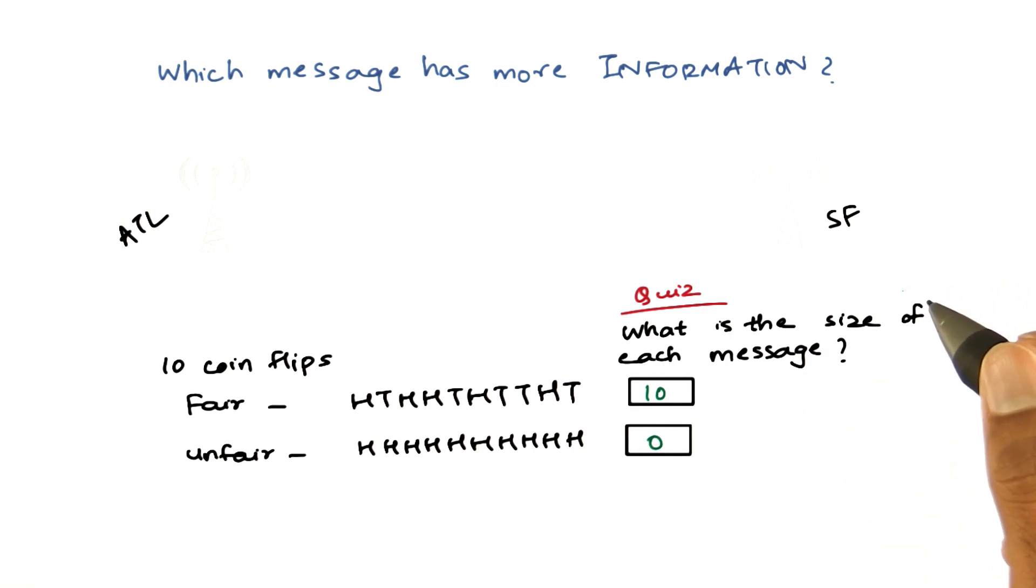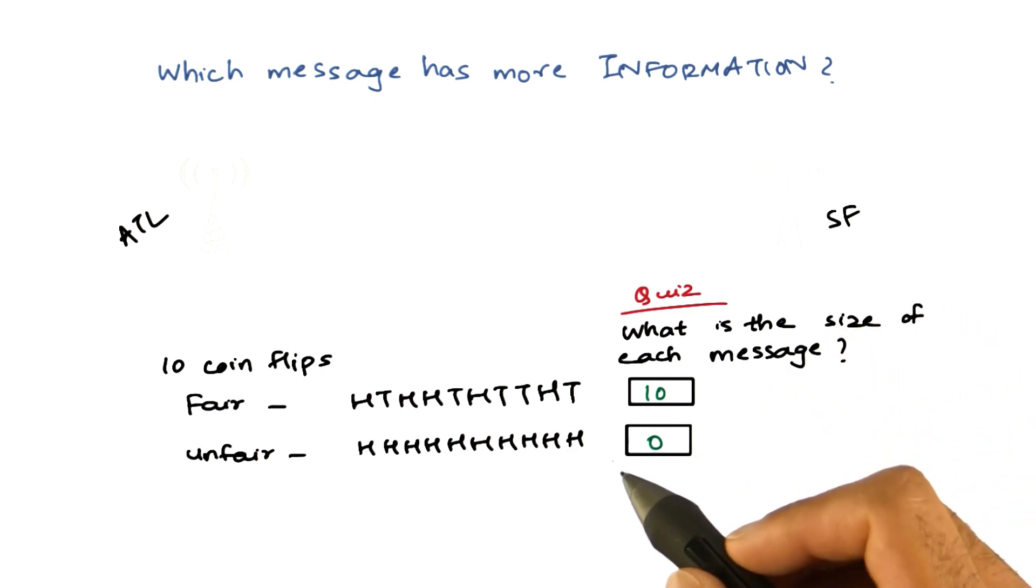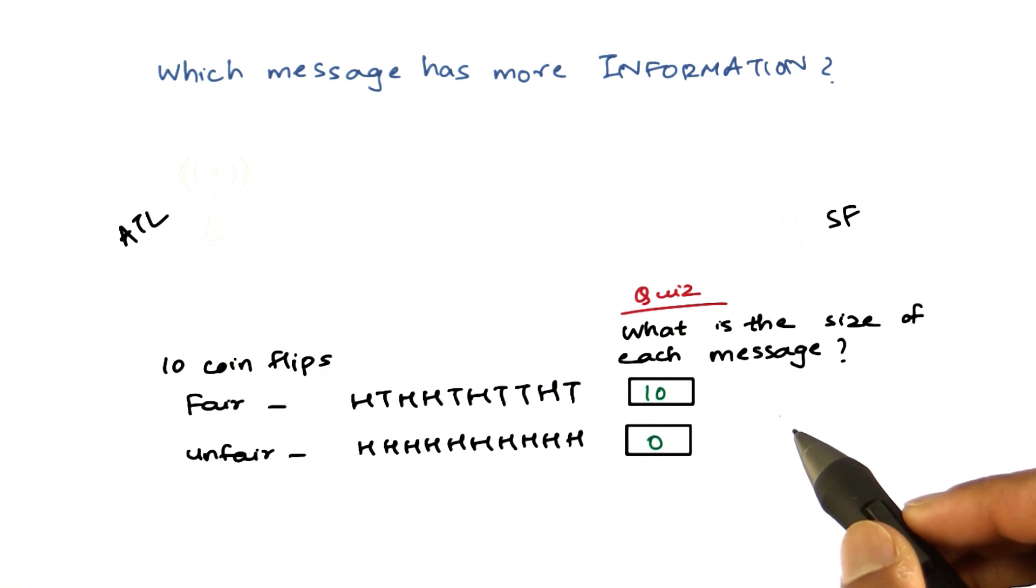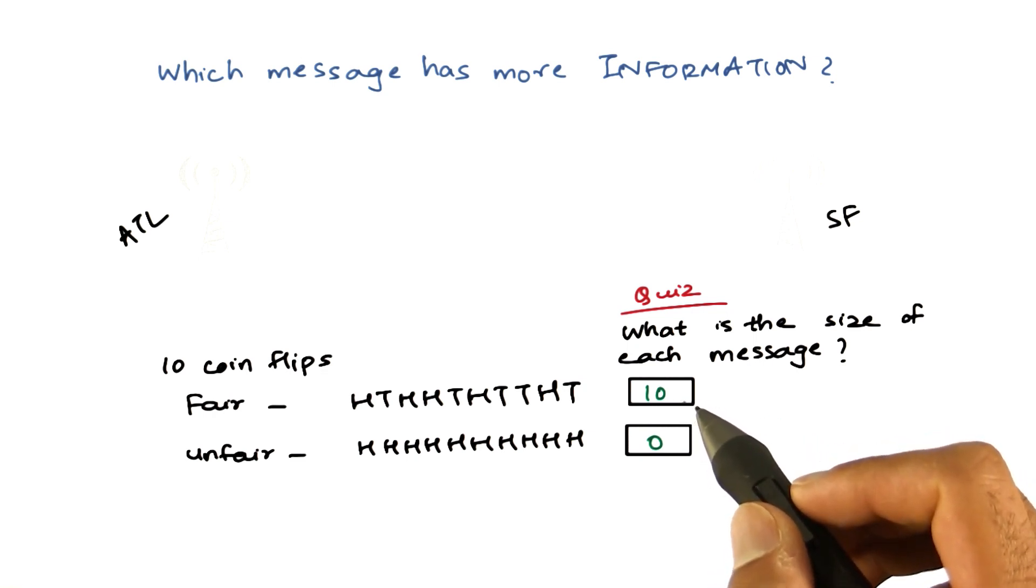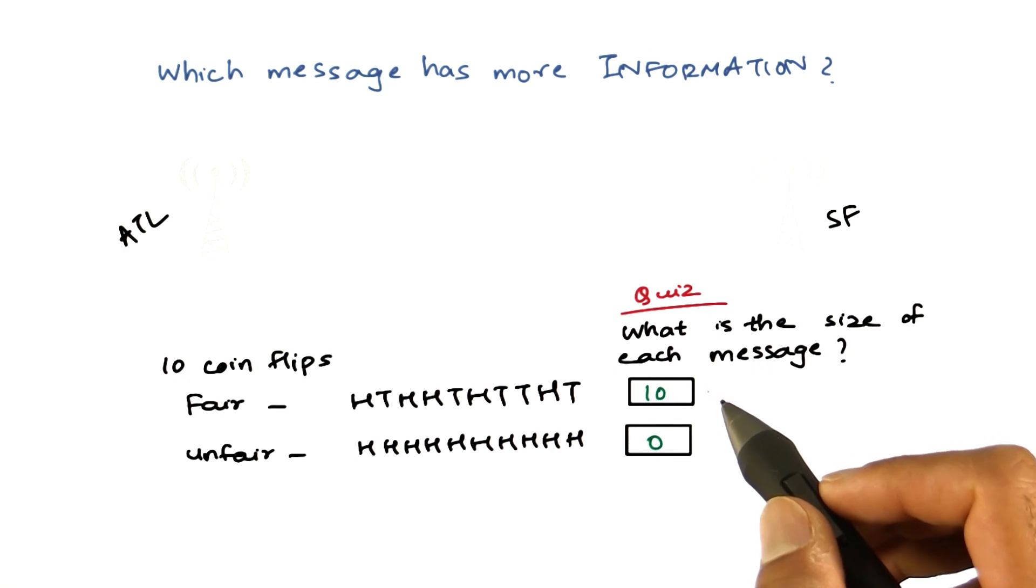So realize what we discovered here. If the output of this coin is predictable, you don't need to communicate anything. But if the output is random, you need to communicate the result of each and every flip. So more information has to be transmitted.